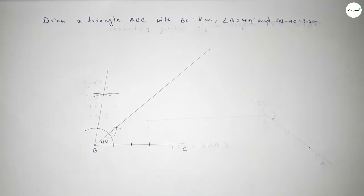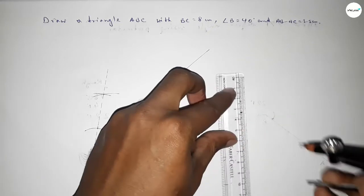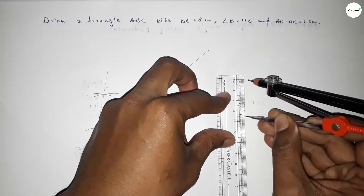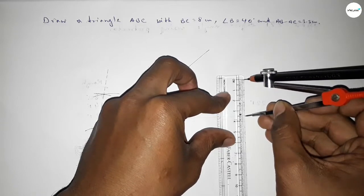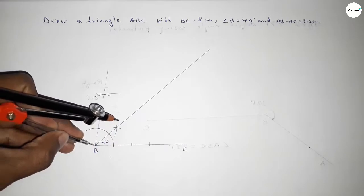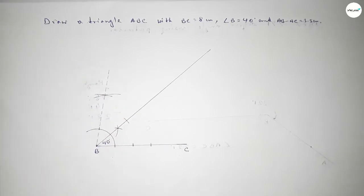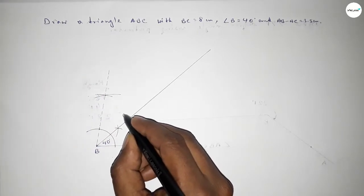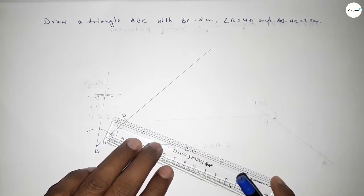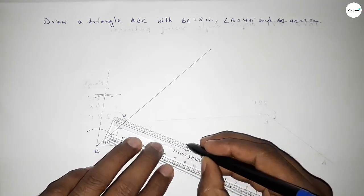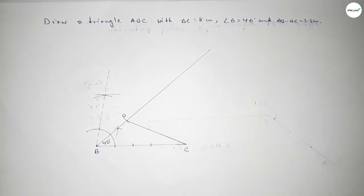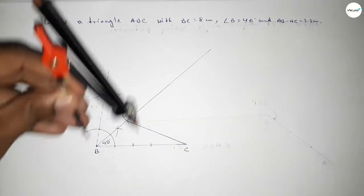Now we have to take 3.5 centimeters length. Taking 3.5 centimeters, putting the compass on point B and cutting on the ray. Taking this as point D. Now joining C and D.